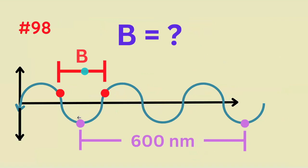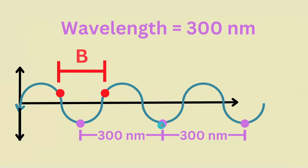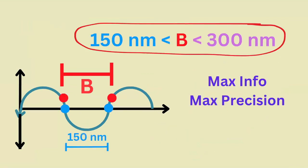What is the length of B if this length is 600 nanometers? 600 nanometers is twice the wavelength, so the wavelength is 300 nanometers. It's very clear that B is smaller than the wavelength, but greater than half the wavelength. Unfortunately, we don't have any more information, so this is as precise as we can define B's length.